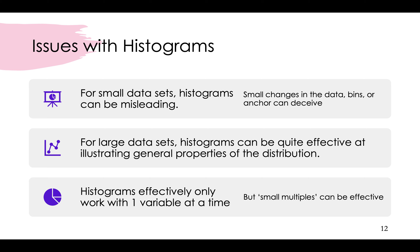For a large dataset, histograms could be quite effective and can illustrate the general properties of the distribution. Immediately you can say, by looking at a histogram, whether your data is normally distributed or not. Histograms are effective when we have only one variable at a time. So if you have many variables, probably you need to look at different ways of visualizing your data.